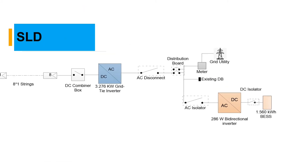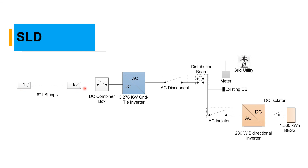The single line diagram for this system shows eight panels in one string feeding into a combiner box, then into a 3.276 kilowatt grid-tie inverter, through an AC disconnector, and into the distribution box. The grid connects to the house through the distribution box, which also connects to the bidirectional inverter and the battery bank, with the 286-watt bidirectional inverter linked to the grid.